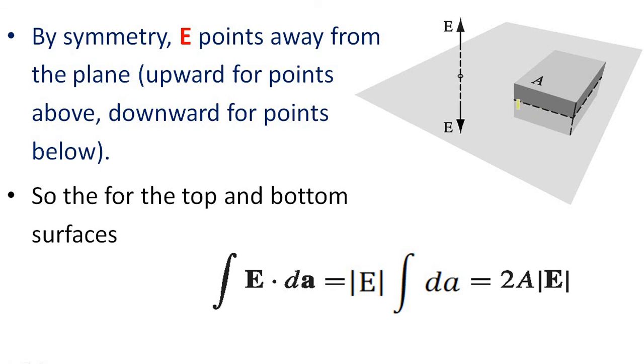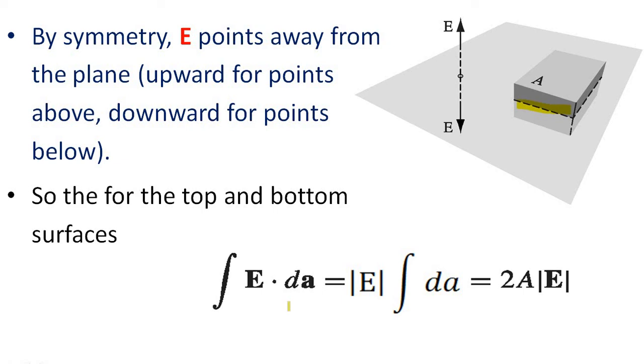Now we consider the case of these sides. For the sides we can write integral E dot dA equal to E dA cos 90. As cos 90 is equal to 0, for the sides the value will be equal to 0. That means the sides contribute nothing.